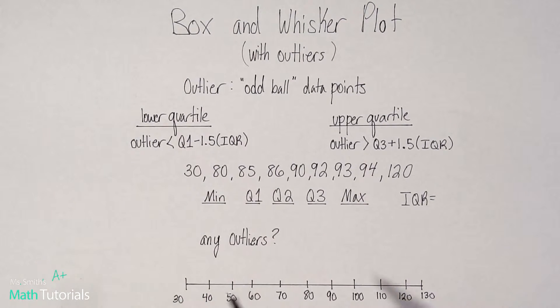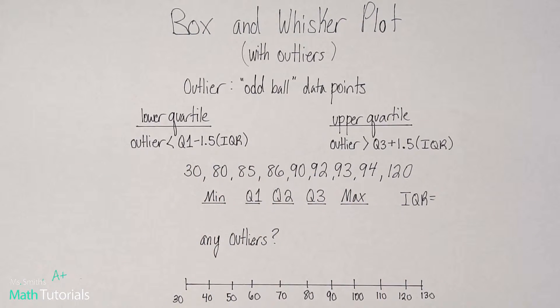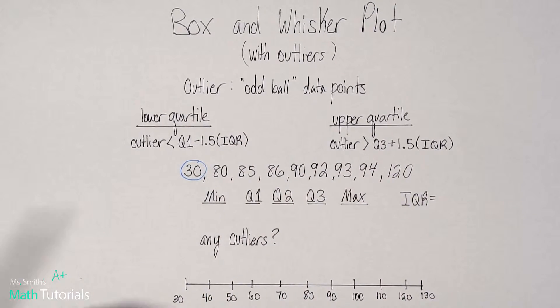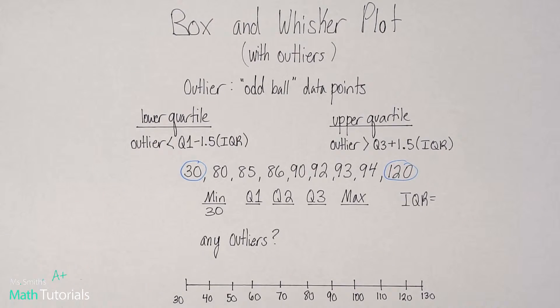So how do we prove something is an outlier or not? Well, we need to start by just laying out our five number summary, and then we'll use these two formulas from there. So I'm just going to quickly go through the five number summary because in my last video, I spent a lot of time on it. So if you need a refresher on that, check out the last video. So my minimum is 30. That's my lowest data point. My maximum is 120. That's my highest data point.